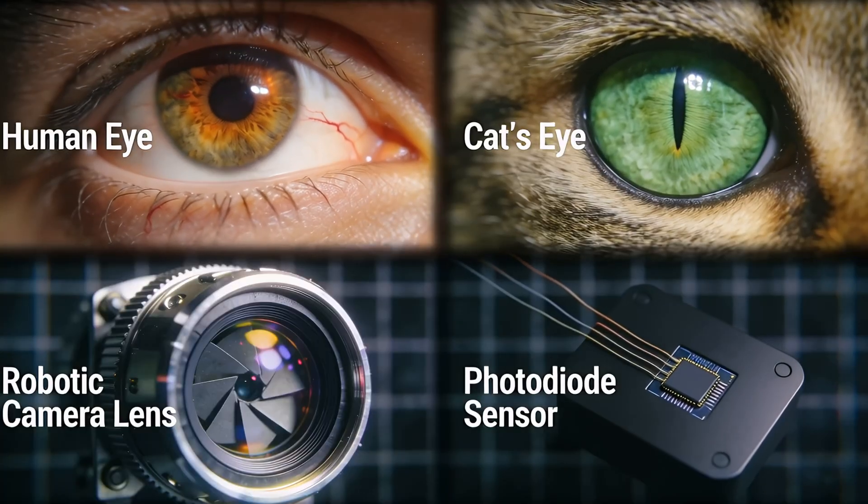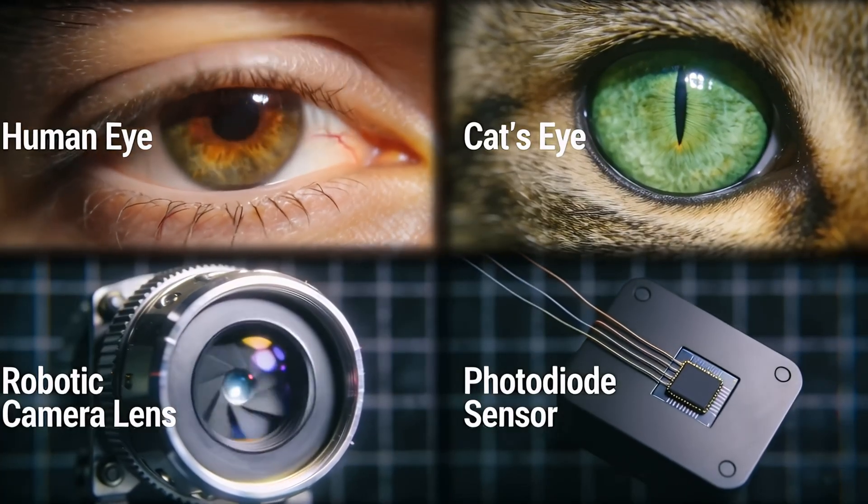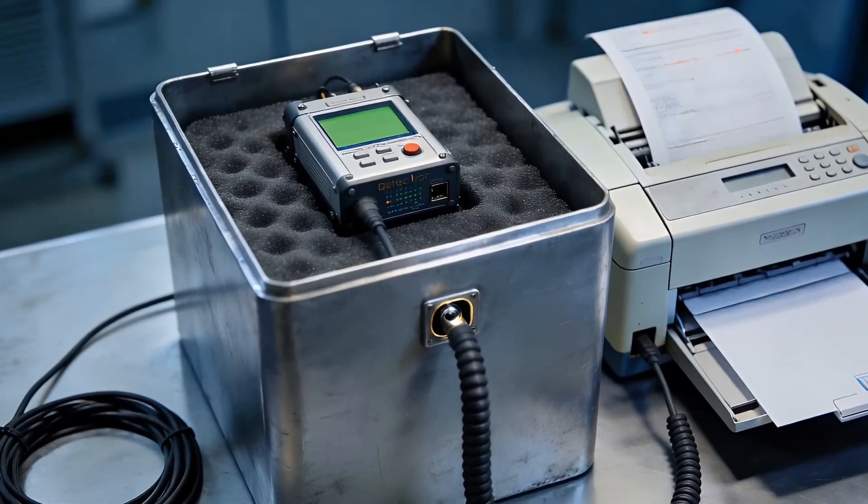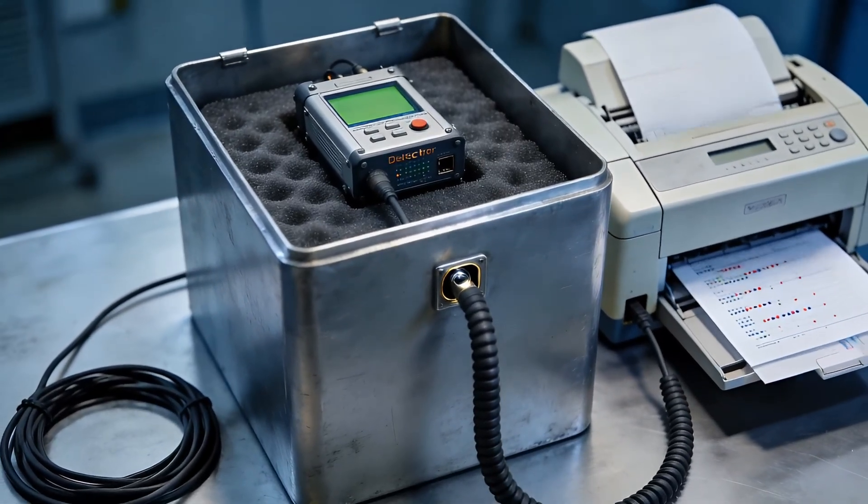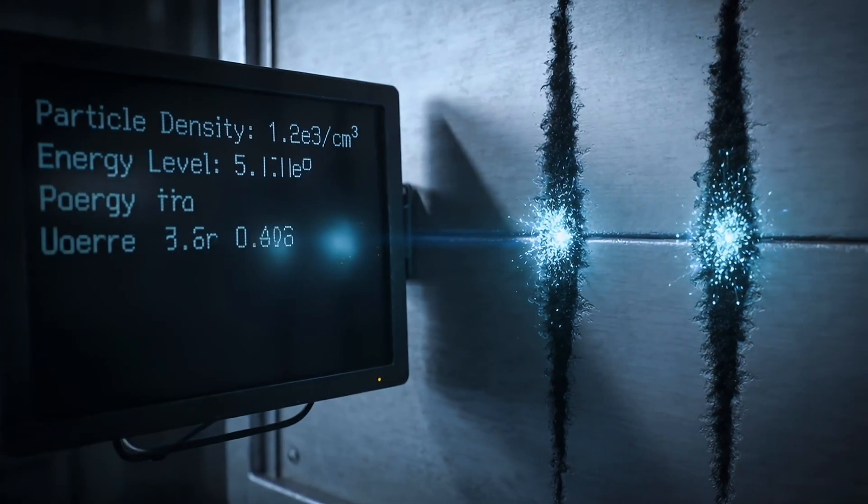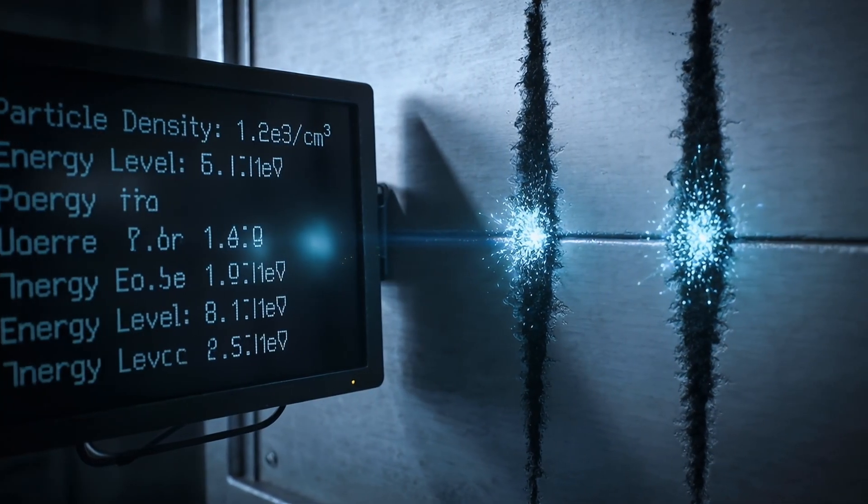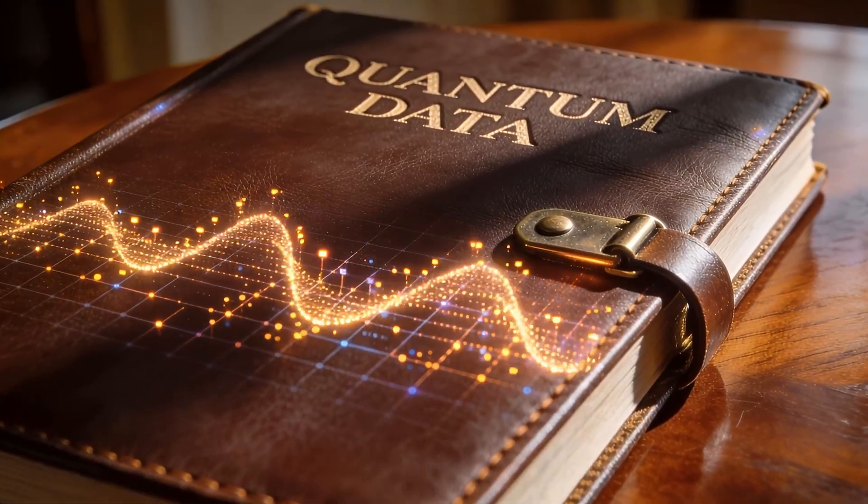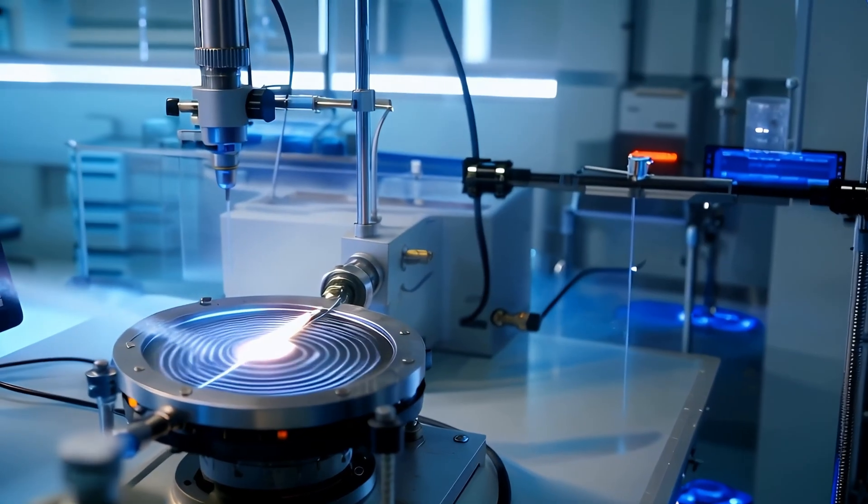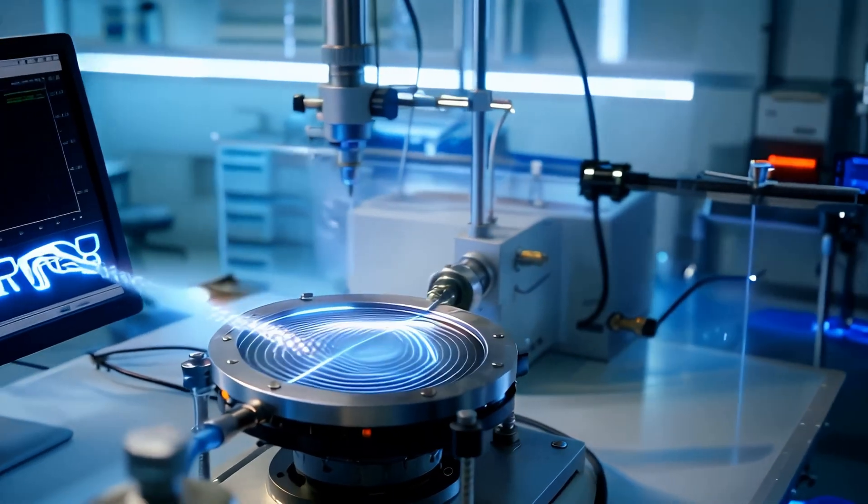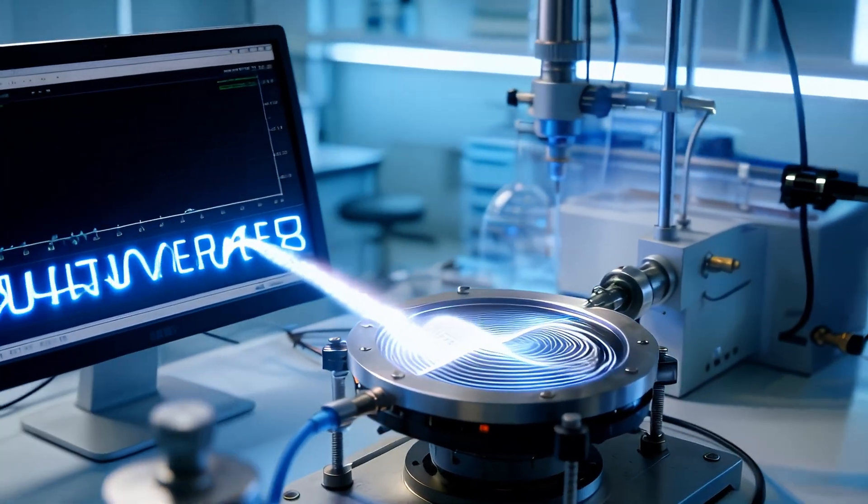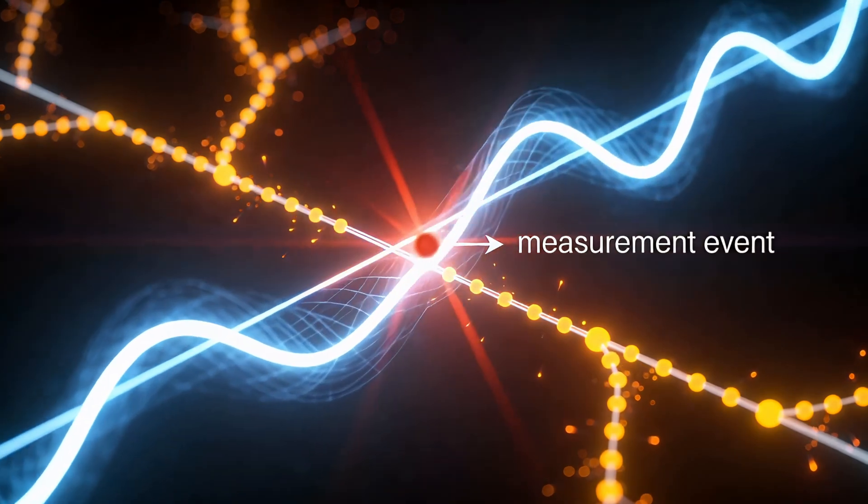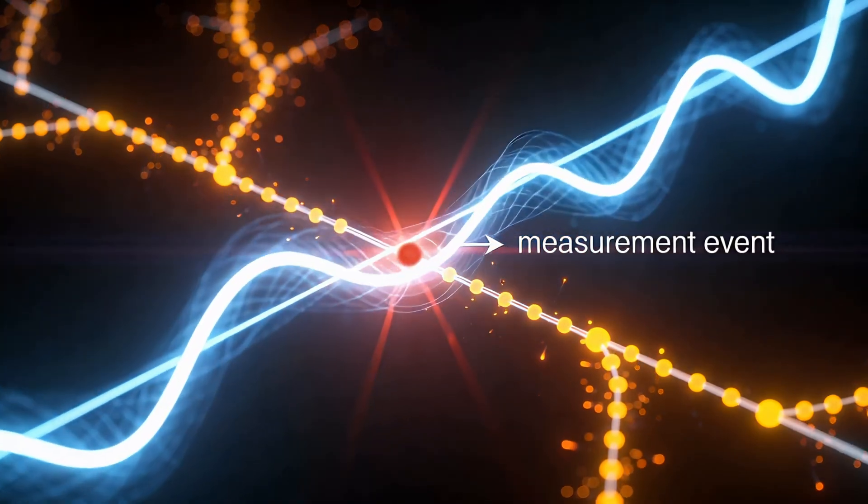But here's where it gets even stranger. What counts as an observer? Does it have to be a human? No. Any device that records information does the trick. Even if no one looks at the data, the interference disappears. It's the act of gaining information that collapses the wave. Some experiments have delayed the choice, erasing the data after the measurement, and the same pattern comes back. It's as if reality retroactively changed based on what we know.